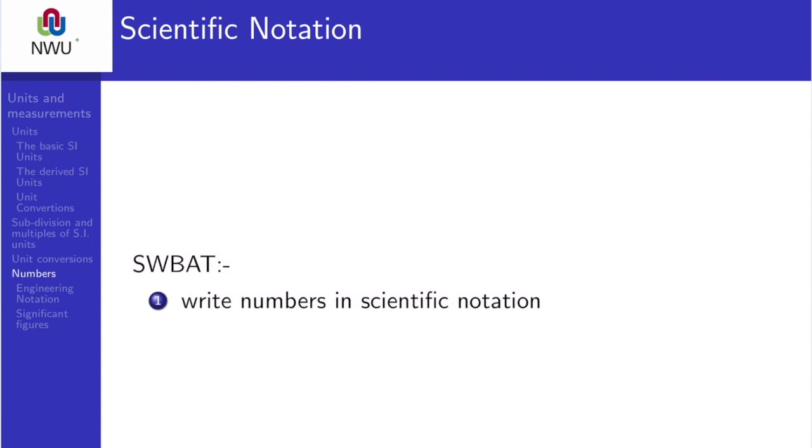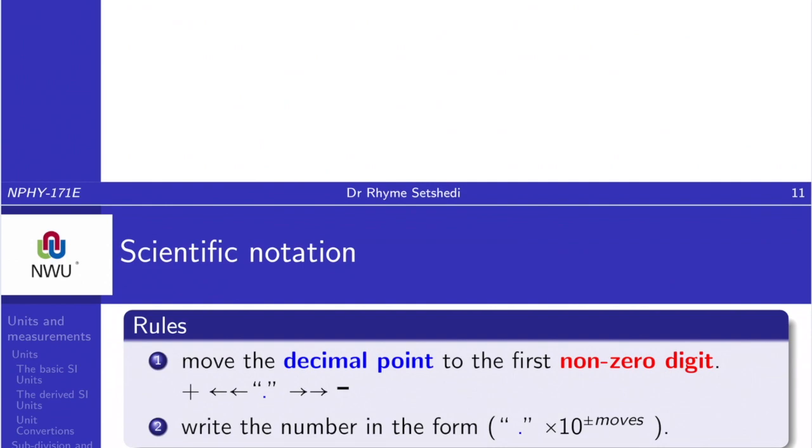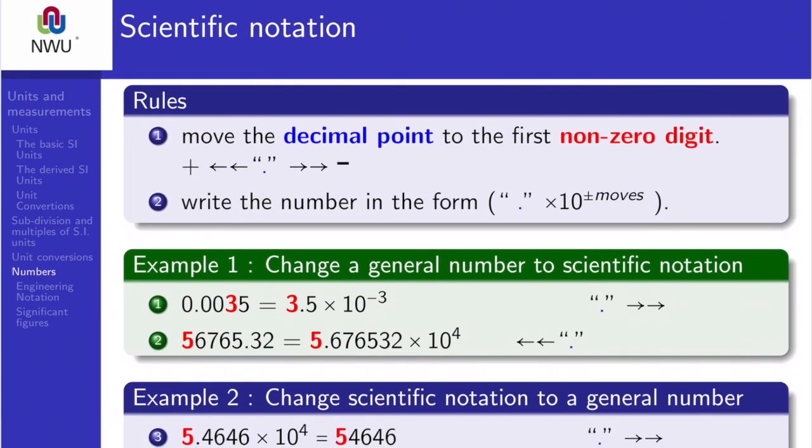First, we look at the scientific notation or the scientific way of writing very large numbers or very, very small numbers. In the scientific notation, you've got to move the decimal point to the first non-zero digit. And when you move to the right, the power of 10 becomes negative, and then when you move to the left, it becomes positive.